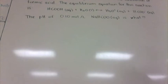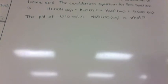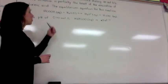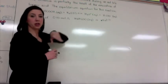The first example we are going to deal with is the following. Formic acid is the irritant secreted during an ant bite. The irritation is partially the result of the ionization of formic acid. The equilibrium equation for this reaction is: formic acid plus water produces a hydronium ion and an HCOO⁻ ion. The question asks for the pH of a 0.1 mol/L solution of NaHCOO. What you first have to notice is that we are not actually dealing with formic or methanoic acid.